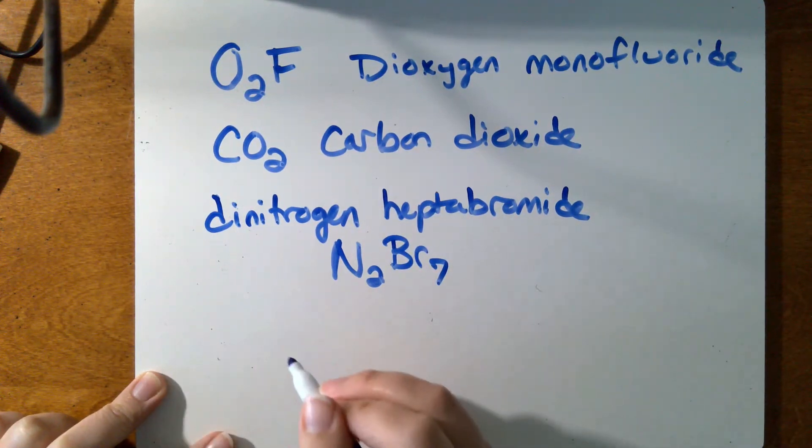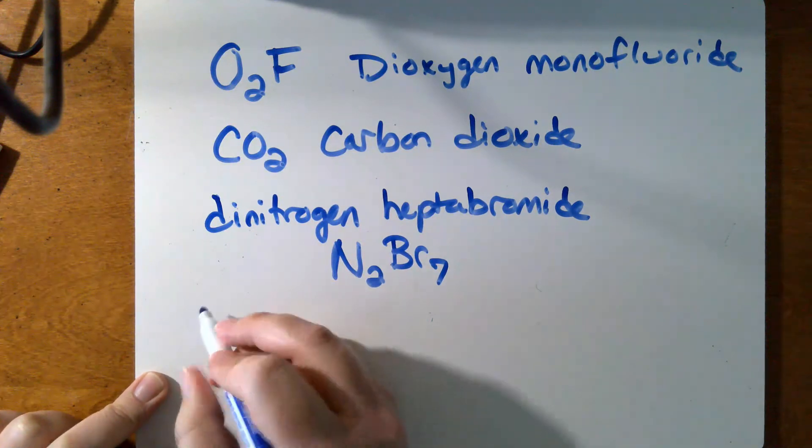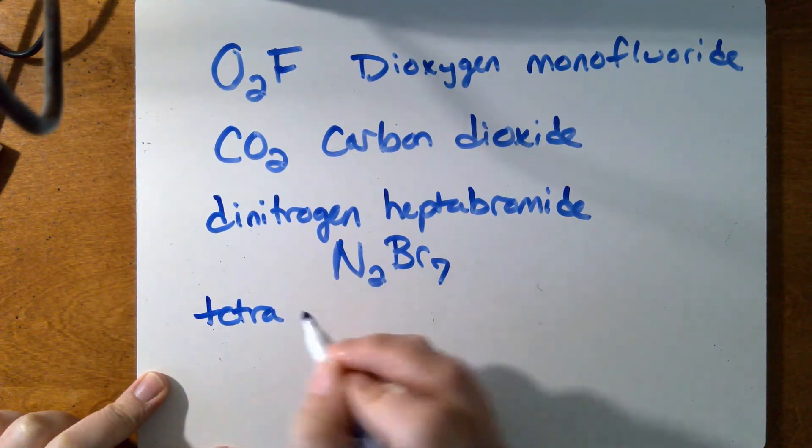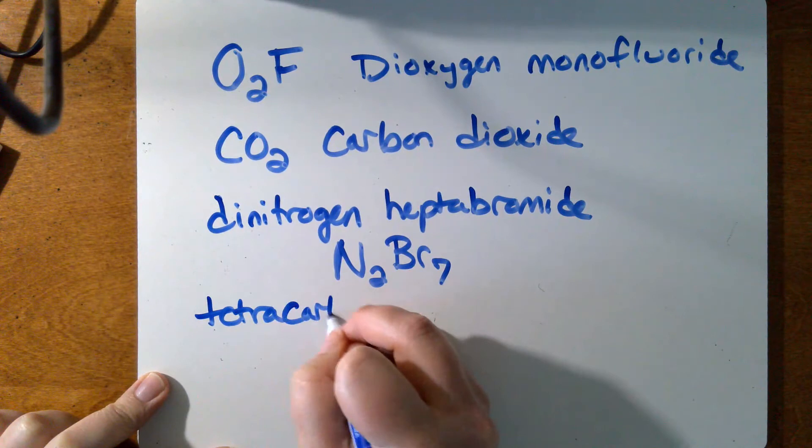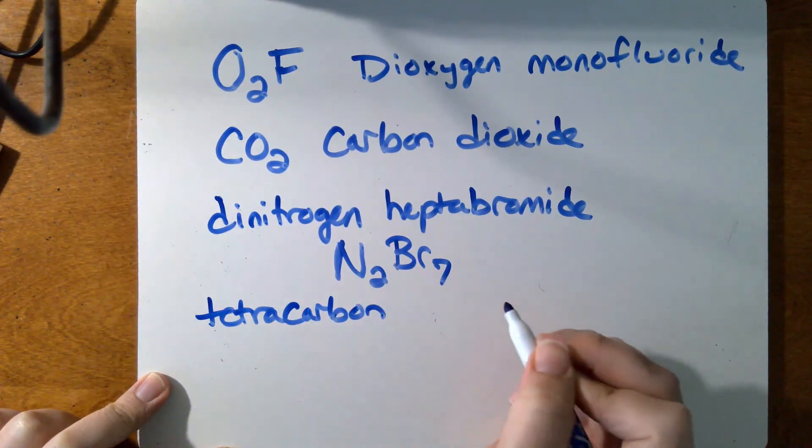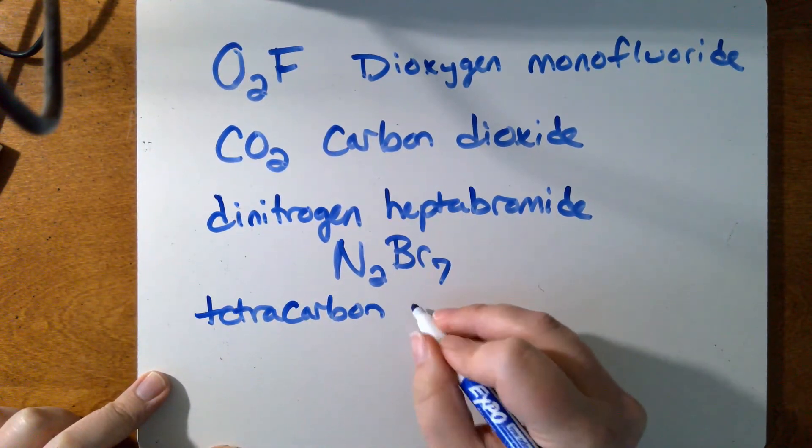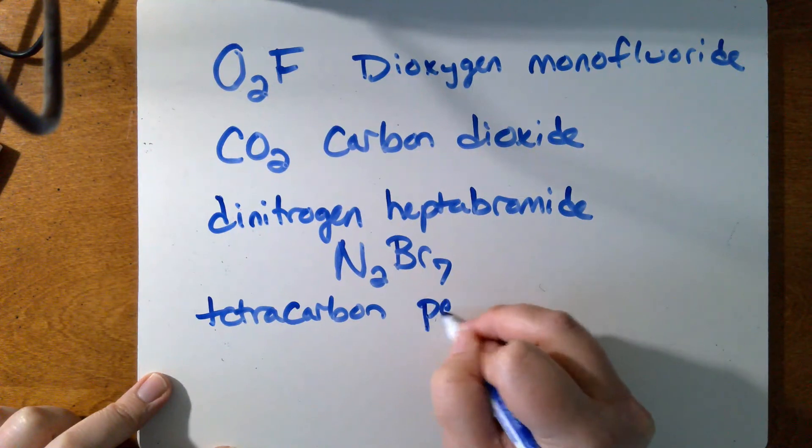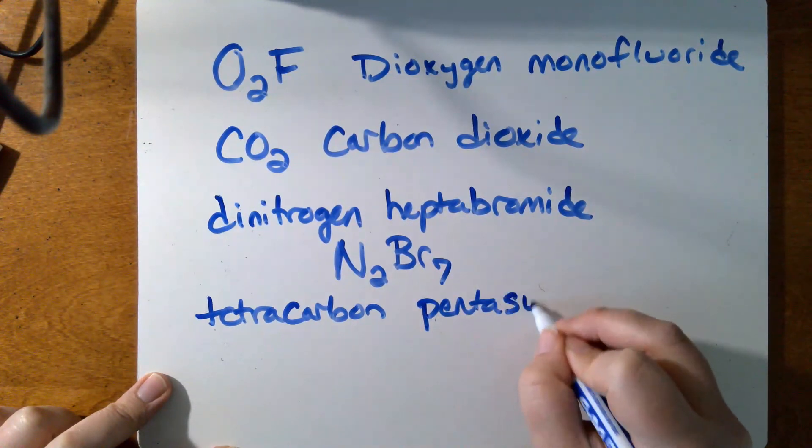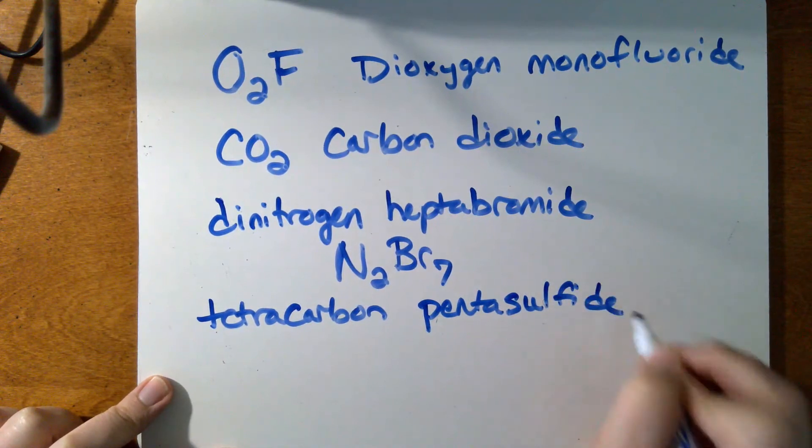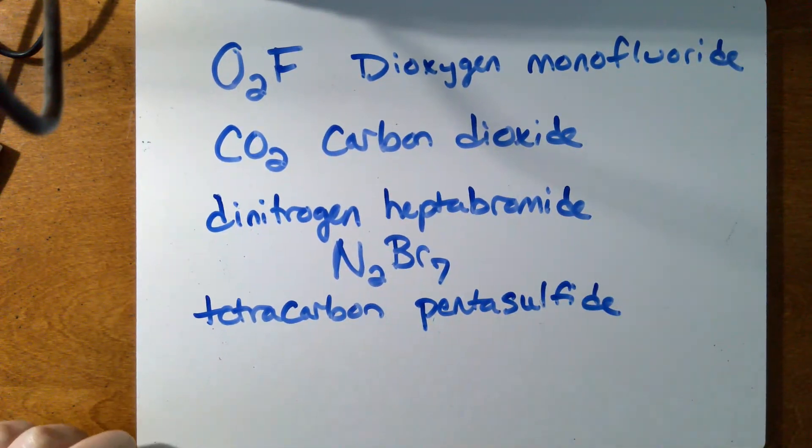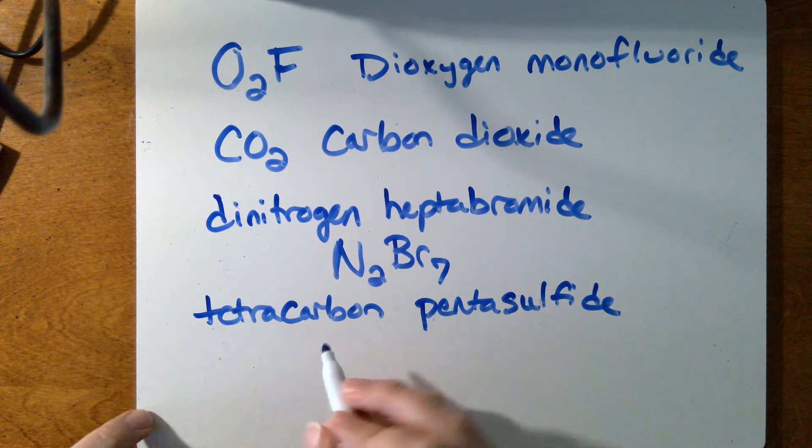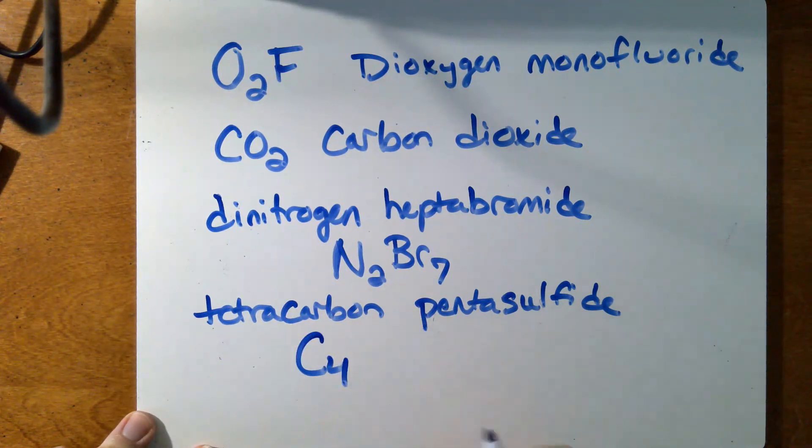I'll do one more example like this. So let's say that I had tetracarbon pentasulfide. That does not exist at all, but it's okay because that's not the point. We're just trying to practice these rules. Tetracarbon, C4 pentasulfide, S5.